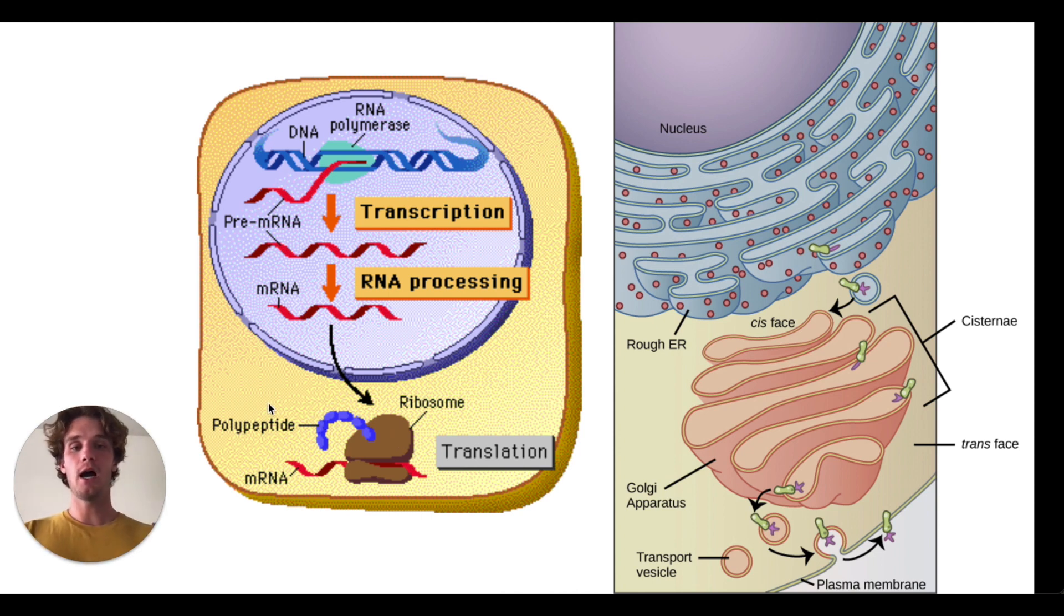Pretty straightforward but some proteins aren't actually done there right. They actually need to be modified in more ways other than just having that raw amino acid structure. So in this case it's being glycosylated so what does that even mean?